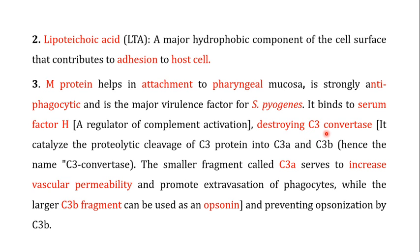C3 convertase is responsible for the proteolytic cleavage of the C3 protein into C3a, which is a smaller fragment, and C3b, which is a larger fragment. The smaller fragment, C3a, serves to increase vascular permeability and promote the extravasation of phagocytes, while the larger C3b fragment is used as an opsonin.